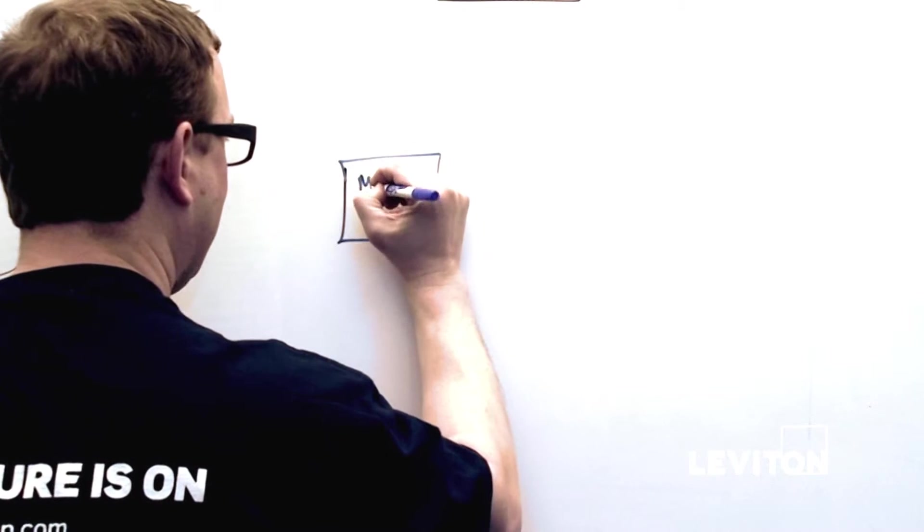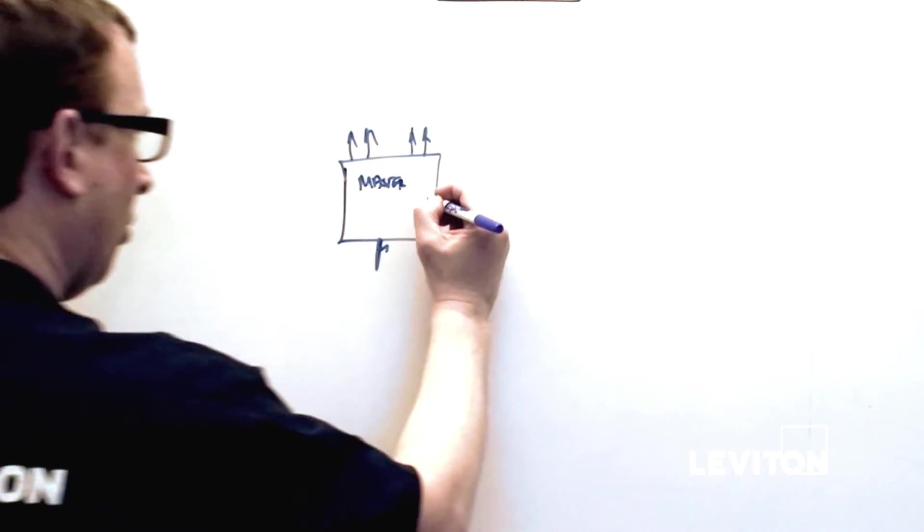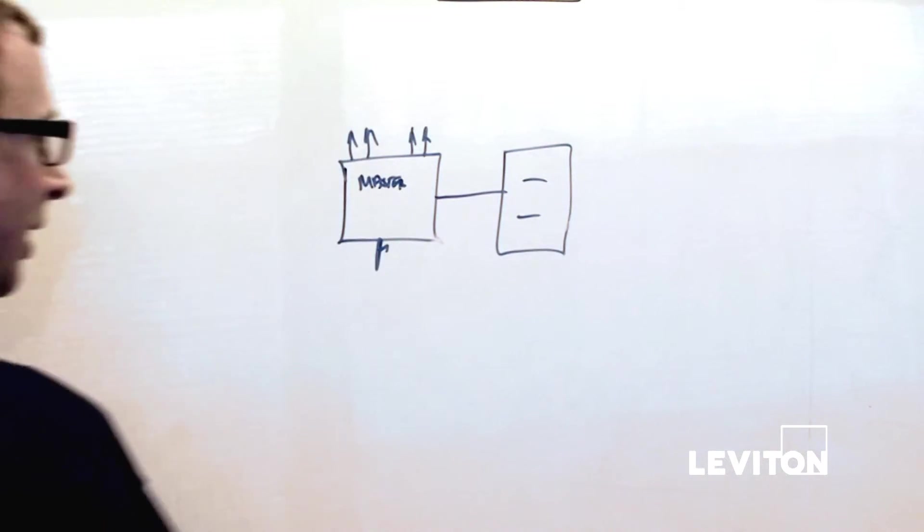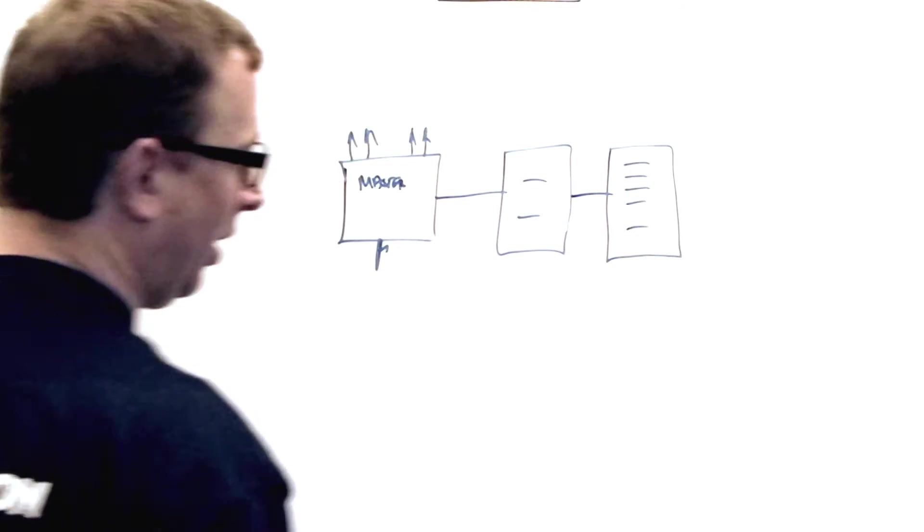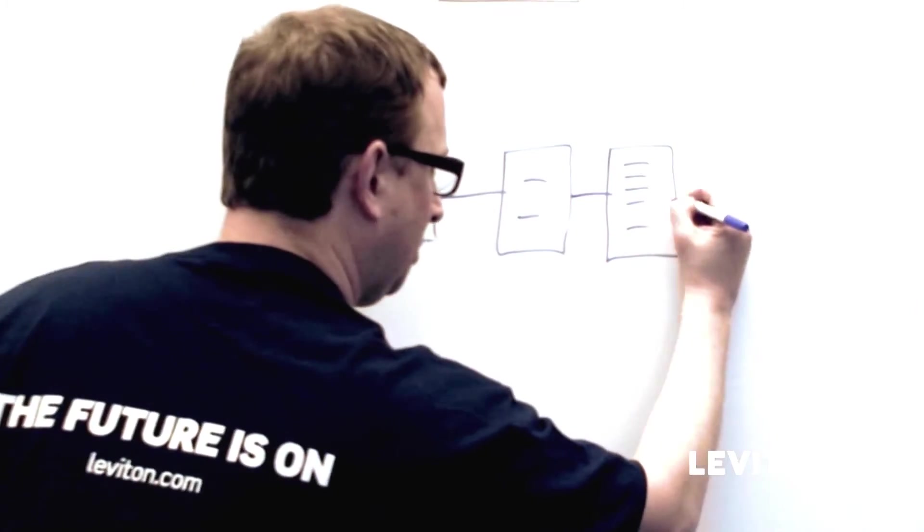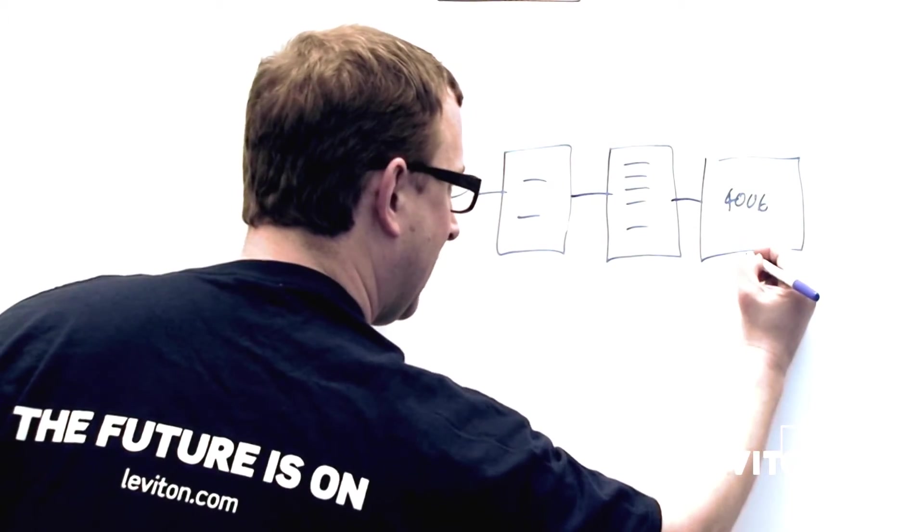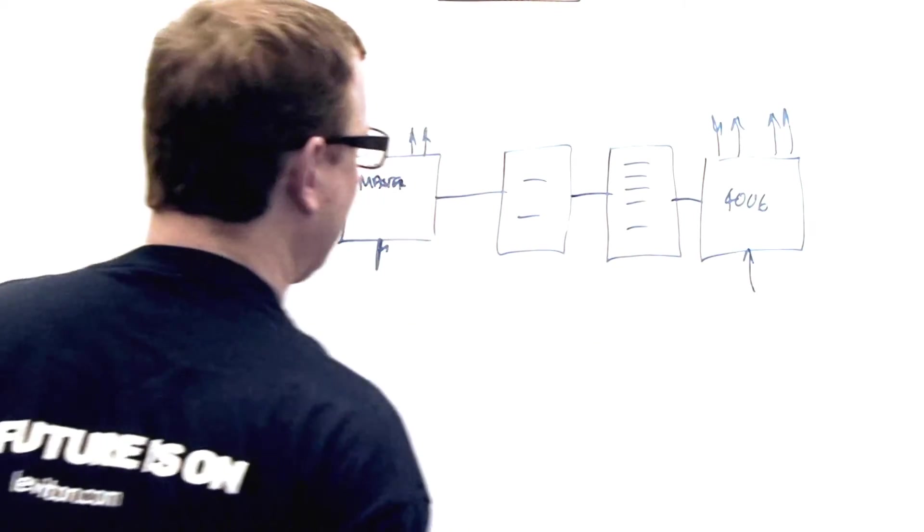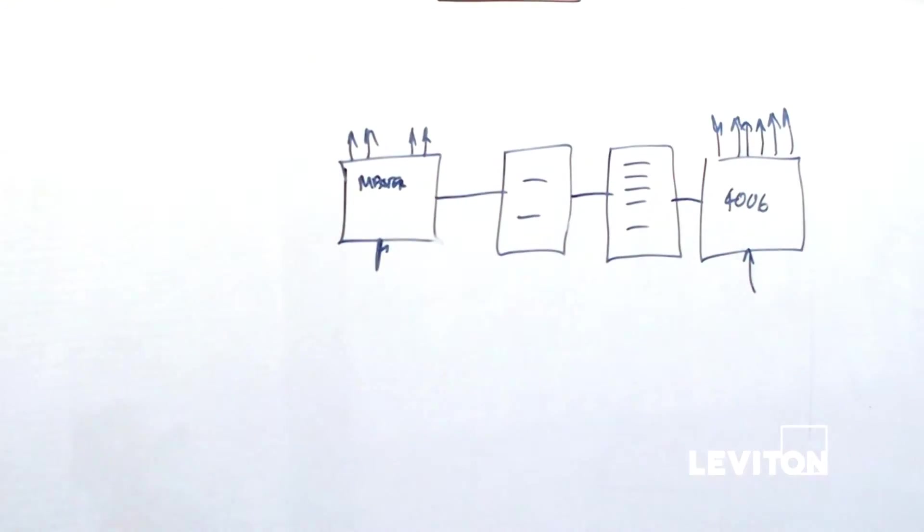So at this point, we've talked about the smallest system where there was a master station only and you have power in and dimmers coming out. We talked about how you add an entry station and how this is the Luminet wire in between. In reality, you could add multiple entry stations. You don't just have to add one. And again, that's just Luminet running in between them. You also could add another Dimensions 4006 for remote dimmers. And that has power going in and individual dimmers going out. The 4006 is really a six-dimmer device, so we would have up to six dimmers on the output.